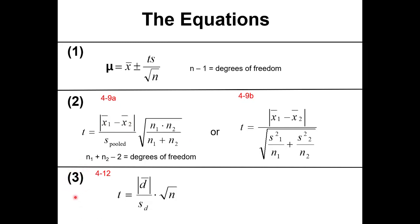For the Case 3 paired t-test, t_calc equals the absolute value of the average difference D-bar divided by the standard deviation in the differences s, times the square root of n, where n is the number of different samples tested. We calculate the difference between the two methods for each sample, average those differences, find their standard deviation, and plug into the formula.